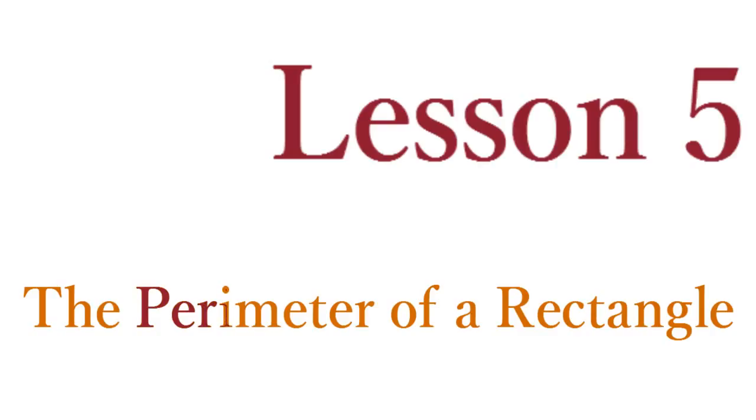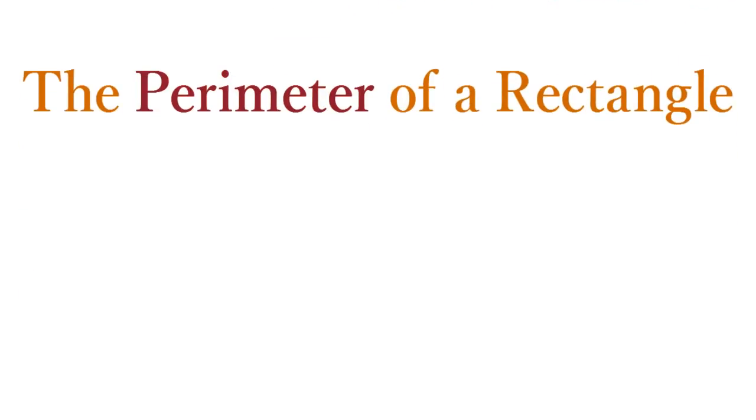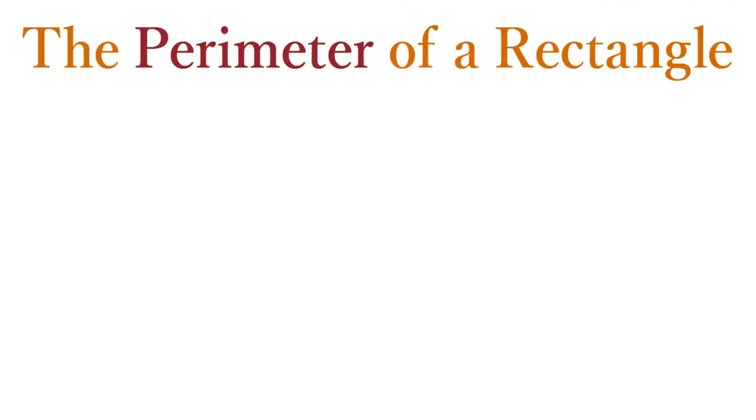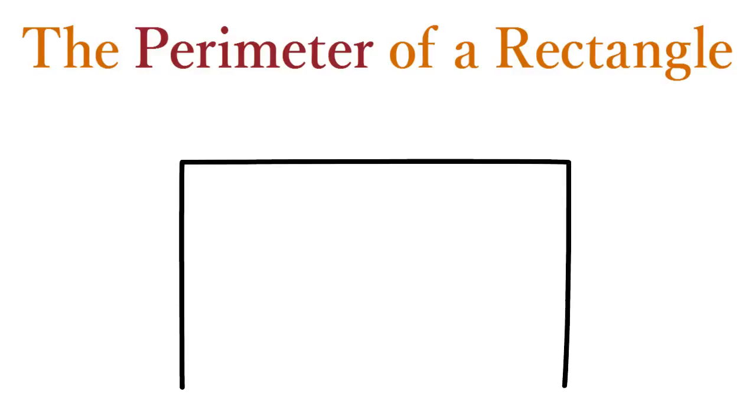you learned that the perimeter of a square is the total distance around its four edges. Similarly, the perimeter of a rectangle is the distance around the four edges of that rectangle. To find this measurement, use the formula: Perimeter equals two times the sum of the base and the height.